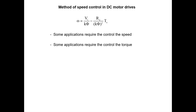In some applications the speed needs to be controlled, however in some other applications we don't need to control the speed but we need to control the torque. The torque is controlled by controlling the armature current.